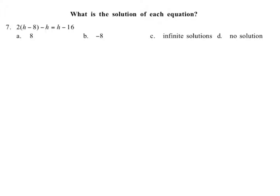So that's the first thing we need to do. We need to simplify this up top. I'm going to rewrite it because we've got stuff in between. 2(h-8)-h = h-16. And I'm going to distribute through.